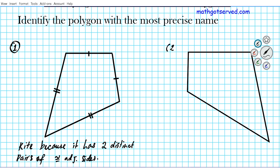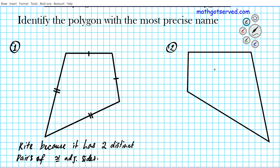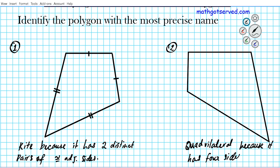How about number two? What kind of quadrilateral is this? All we know is that it has four sides — we don't know anything about the angles or dimensions of the sides. So if you just have a polygon with four sides given, you just call it a quadrilateral. It's a quadrilateral because it has four sides. You can't make any assumptions.